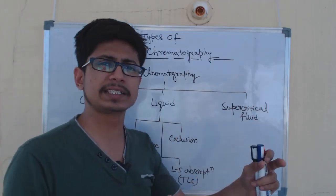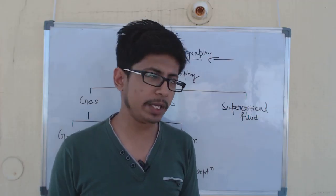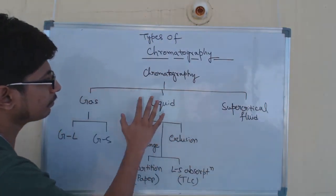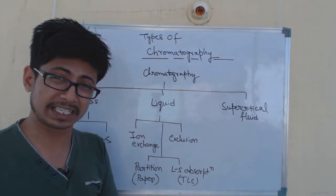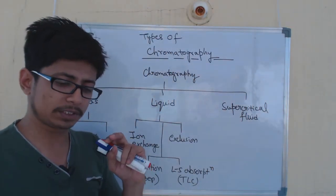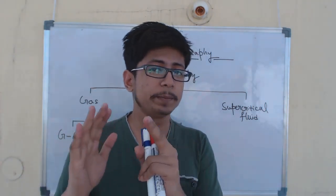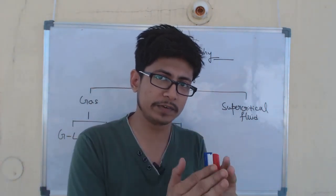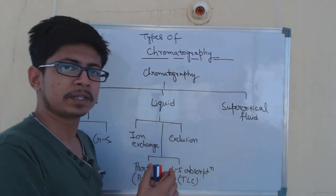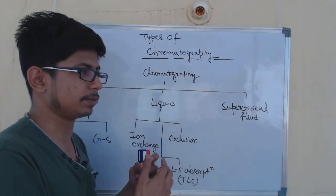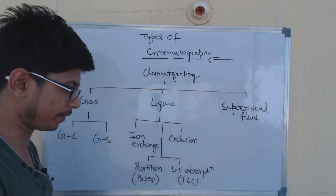Chromatography techniques can be divided based on many different parameters, but majorly we divide them based on the type of solvent that we use — the phase of the solvent — because the phase could be solid, liquid, or gas. Depending upon the phase of the solvent and also the phase of both our separation stage as well as the mobile phase, we determine the different types of chromatography.